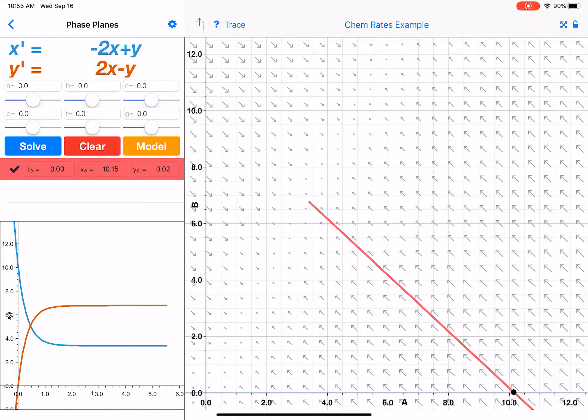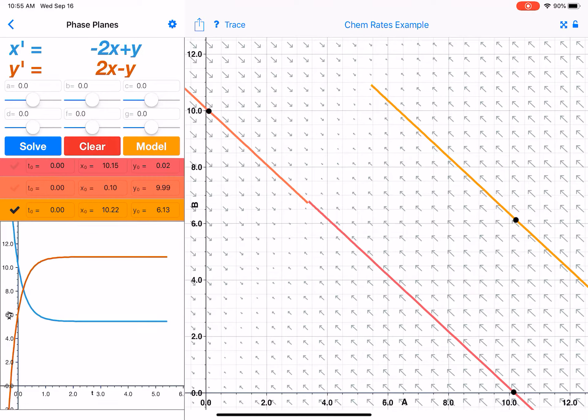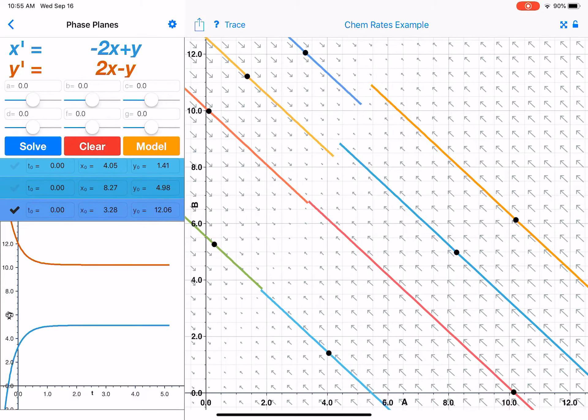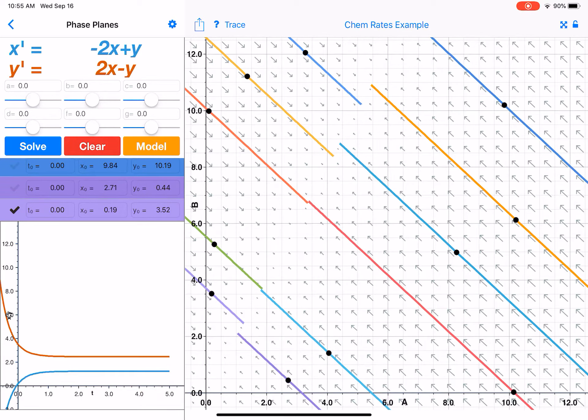But if I start with, say, zero of A and 10 of B, then solutions also seem to approach an equilibrium point. Seems to be about at the same place, but then if I start in other positions, we approach different equilibrium points. And so there seems to be multiple equilibrium points here, not just one equilibrium point.